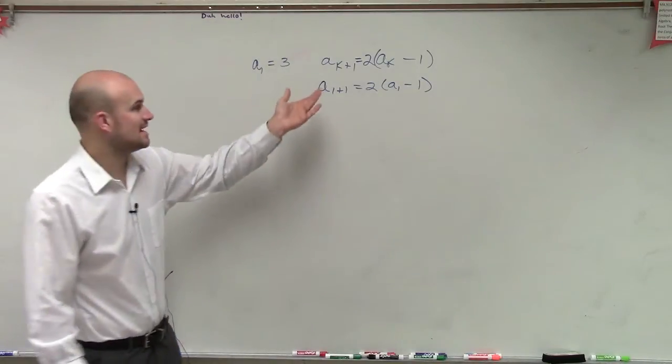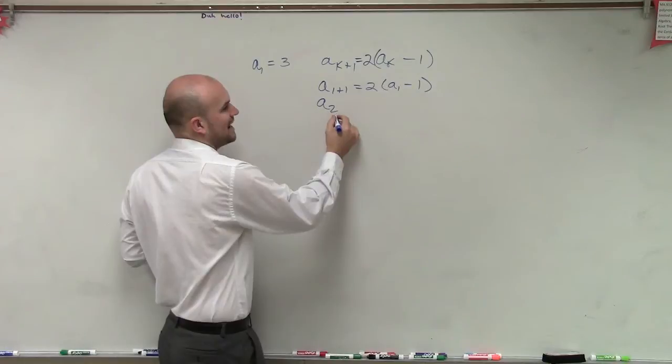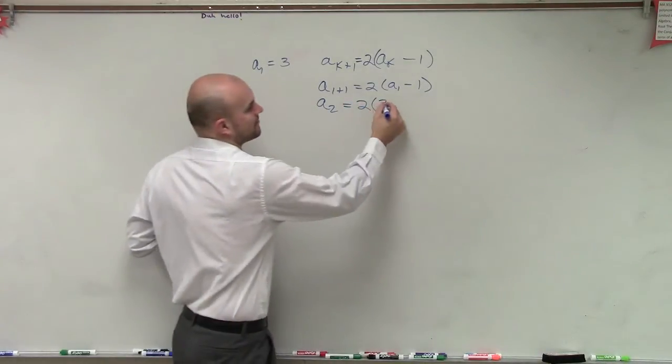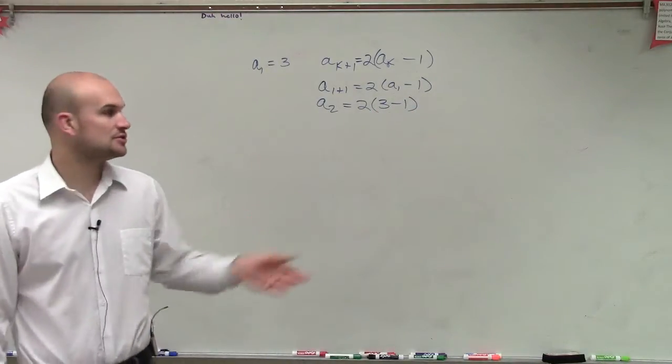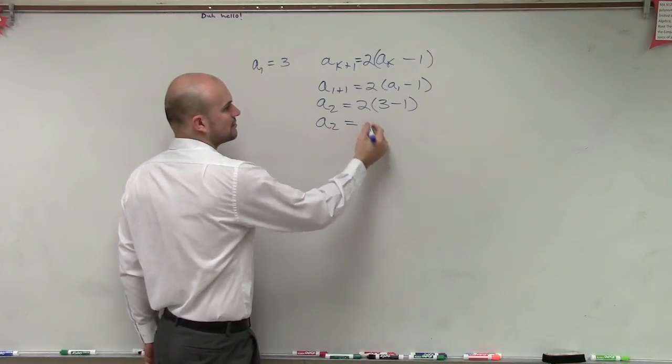Well, what that means then, if I put my a sub 1 in there, I'm now finding the value of a sub 2 equals 2 times a sub 1, we said was 3, minus 1. Well, 3 minus 1 is 2, 2 times 2 is 4. Therefore, a sub 2 equals 4.